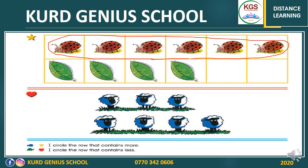Of course, the first one. Why? Who can tell me why? Think about it. Who can tell me — because three is less than four. Well done. Very good. That's why we have to make a circle around the first row.